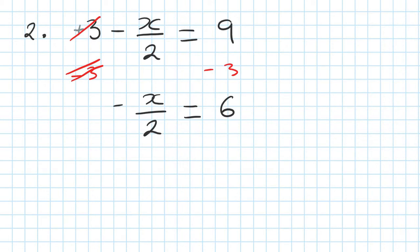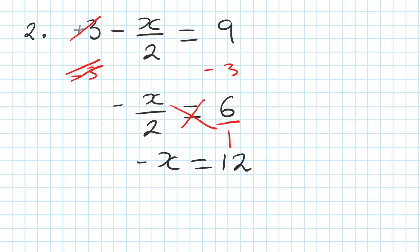Then I can multiply by 2, or we can do cross multiply: 6 is just like 6 over 1. So 1 times negative x is negative x, and 2 times 6 is 12. So negative x is 12. Therefore x must be the opposite — x is negative 12.